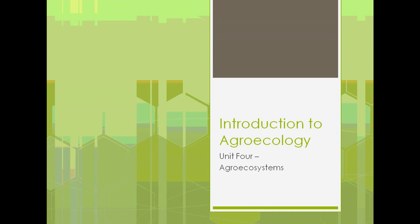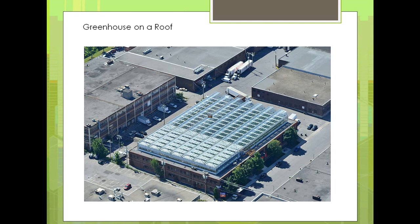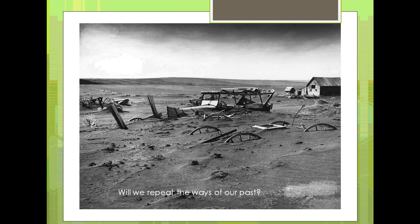Welcome back to Introduction to Agroecology. This is the fourth unit and we're going to talk about different types of agroecosystems that exist today. This is a picture of a greenhouse in Montreal, Canada, built on top of an old office or factory building. It's a functioning greenhouse, and I thought it was an interesting picture to show that agroecology can come in many forms, shapes, and sizes.